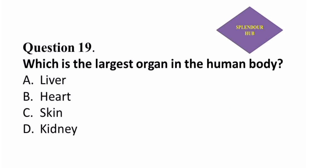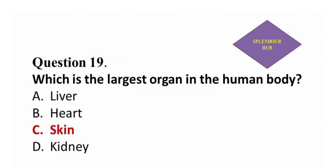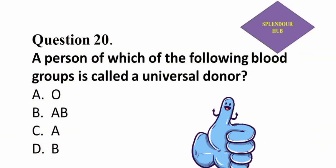Question 19: Which is the largest organ in the human body? — option A: liver, option B: heart, option C: skin, option D: kidney. Answer: The largest organ in the human body is skin.